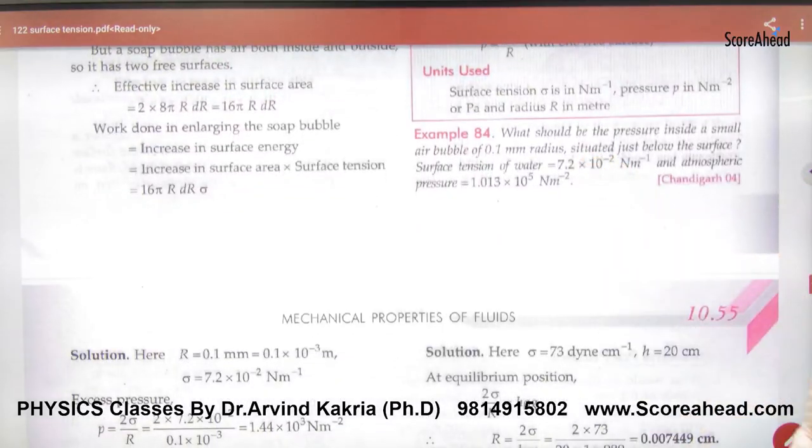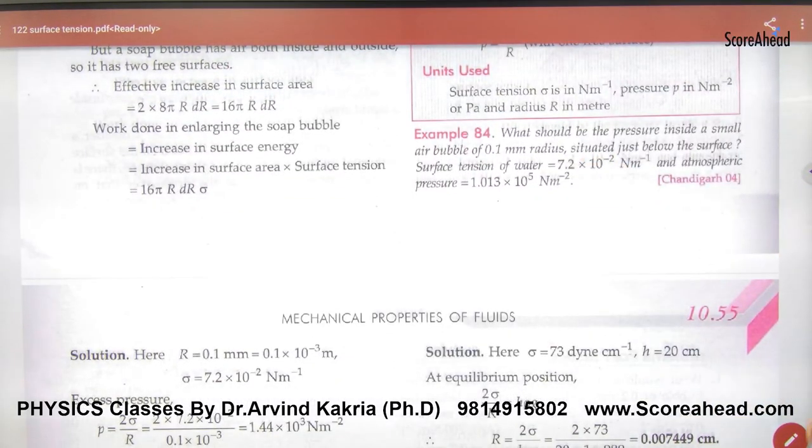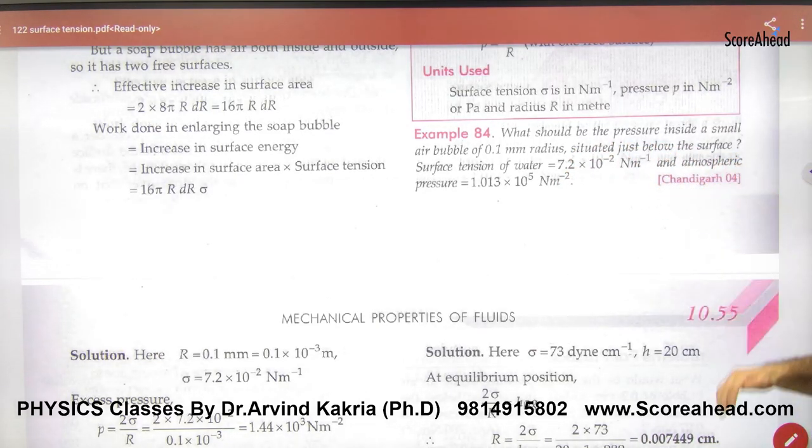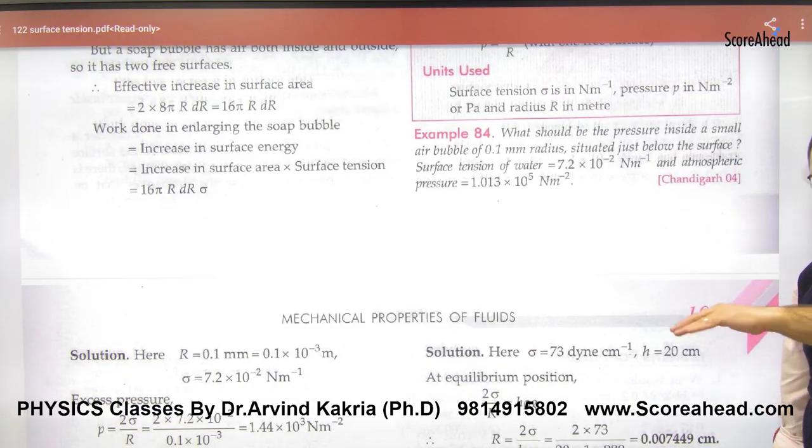First question. What should be the pressure inside a small air bubble? Under the air bubble, we have to remove pressure inside, P inside. And this is the radius. Situated just below the surface. Don't take h. Below the surface should be water. Below the surface should be water. So you have to remove inside pressure.